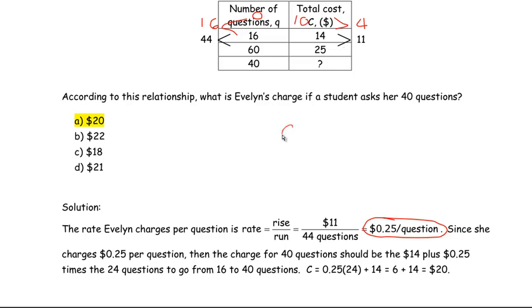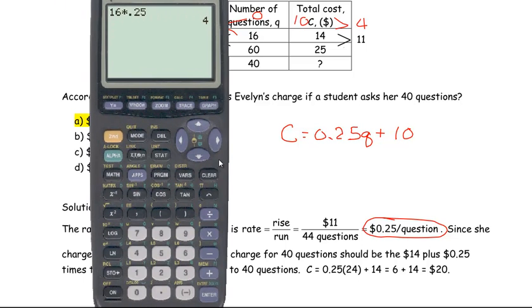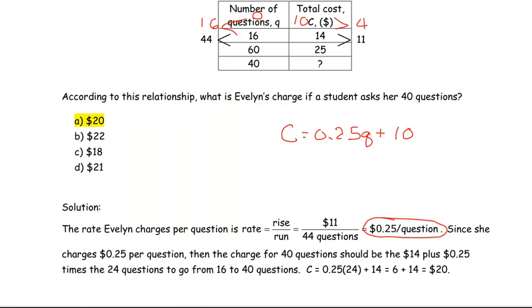would be: the charge is 25 cents per question—we call it Q, the number of questions—plus that fixed $10. So C = 0.25Q + 10. If we take the calculator and go 0.25 times 40 questions plus the $10, we get $20. So 40 questions should be charged $20. That's the end of the solution. Thank you.